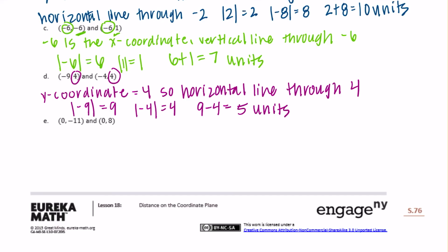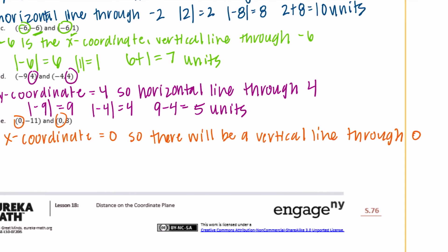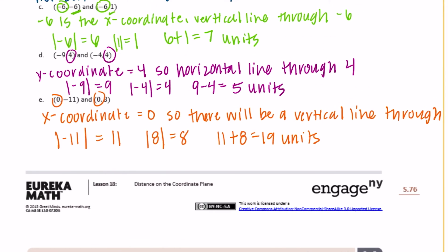For the last one, endpoints 0, negative 11 and 0, 8: they both have an x-coordinate of 0, so there will be a vertical line through 0. The absolute value of negative 11 is 11 and the absolute value of 8 is 8. They're on opposite sides of zero, so we add: 11 plus 8 equals 19 units. So the distance is 19 units. That's all for lesson 18 classwork.